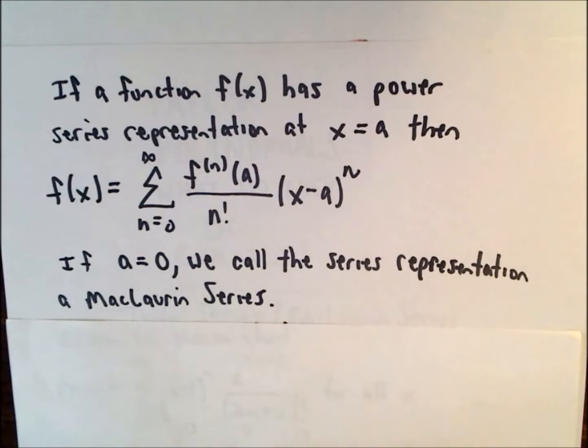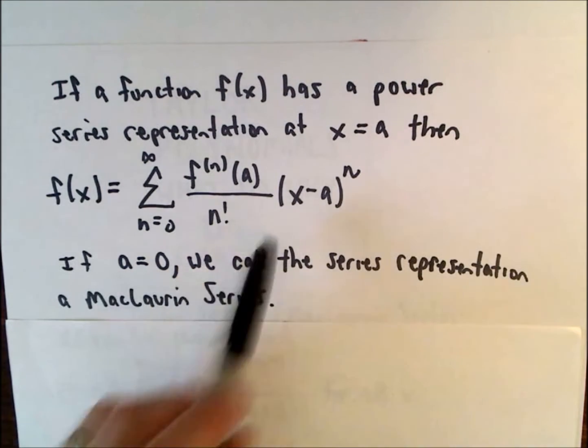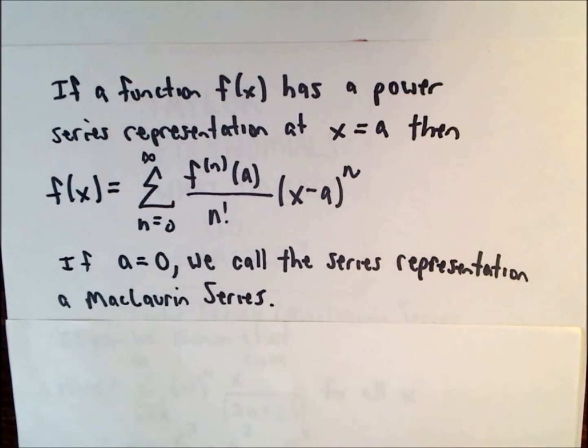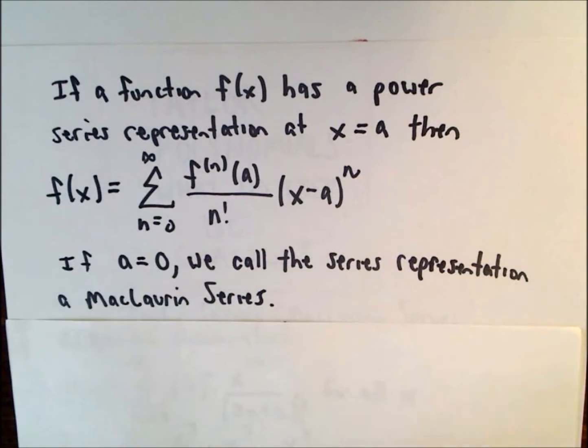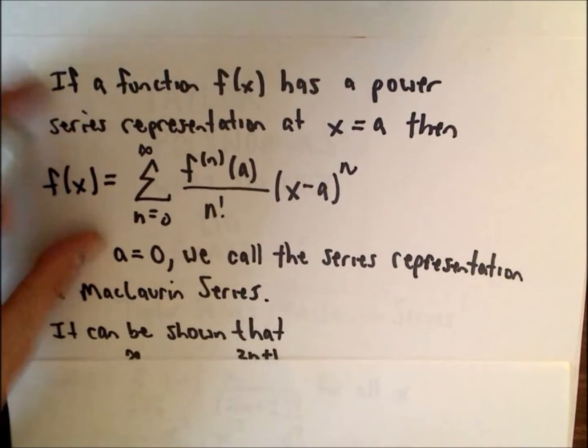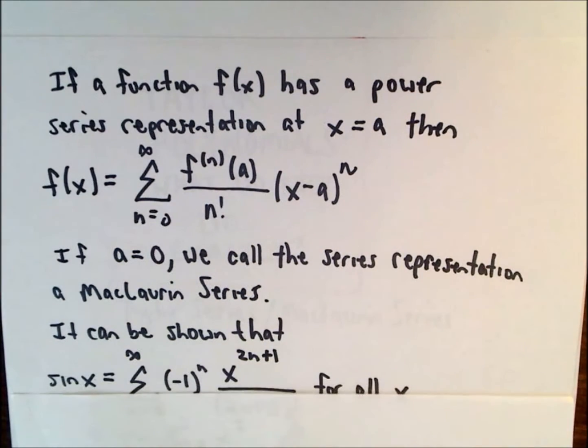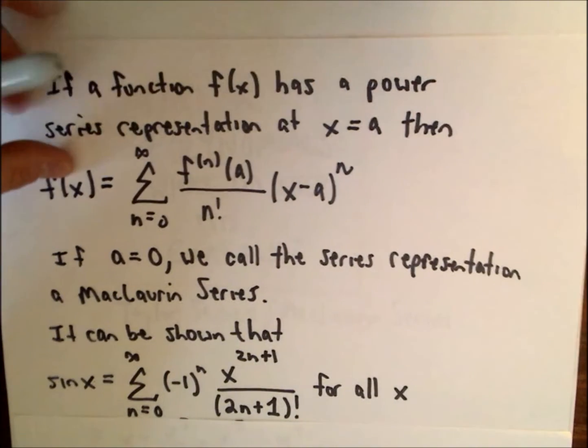So if a equals zero, we call this series a Maclaurin series. This is what's known as a Taylor series. If we let a equals zero, it's called a Maclaurin series. It turns out that sine of x has a Maclaurin series representation that's valid for all values of x, and here it is.